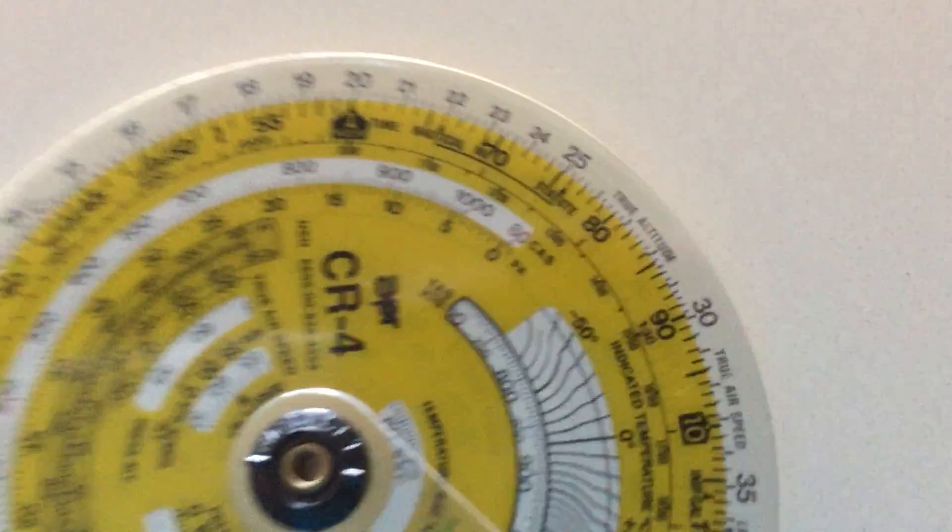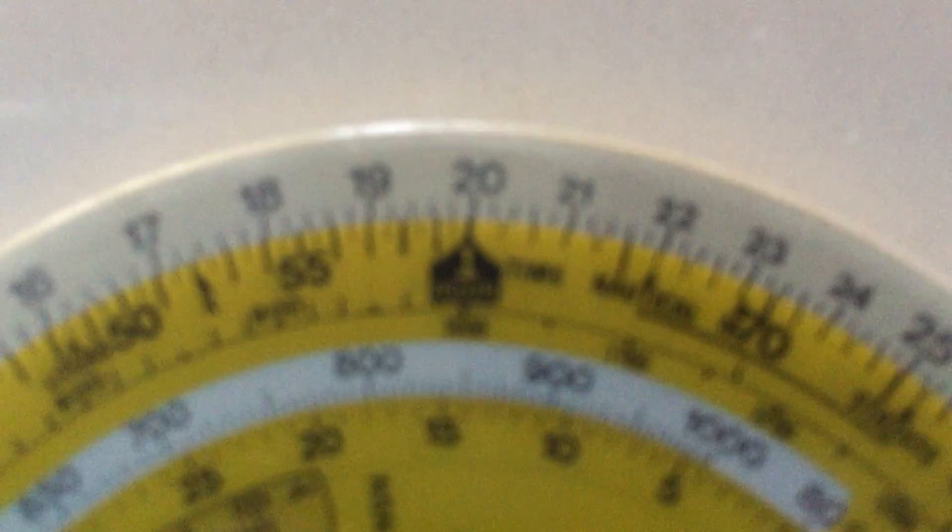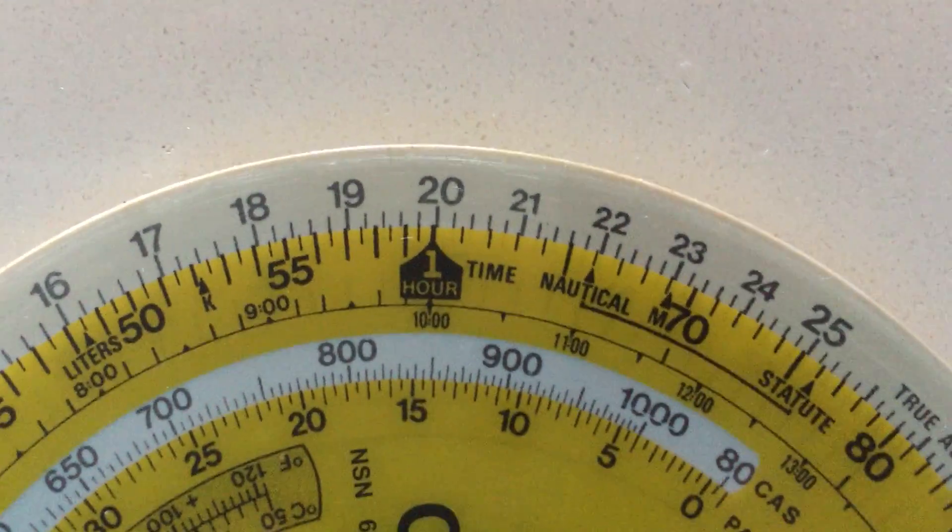The third way to use your Jeppesen type calculator is to work out fuel. So let's say we set one hour mark on 20 litres per hour.